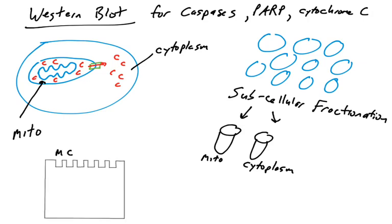To detect this via Western blot, cells must first be lysed and the cytoplasm separated from the mitochondria — a process called subcellular fractionation — and each fraction analyzed on protein gels via Western blotting for the presence of cytochrome C. If apoptosis is not occurring, cytochrome C will be present in the mitochondria but not in the cytoplasmic fraction. If apoptosis is occurring, cytochrome C will be found both in the mitochondria and in the cytoplasm.